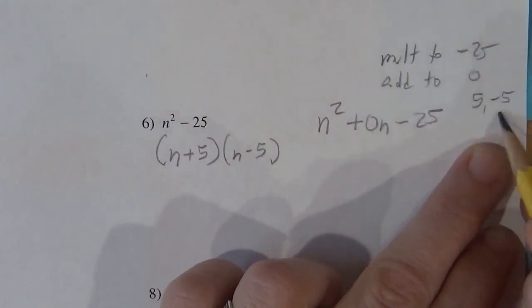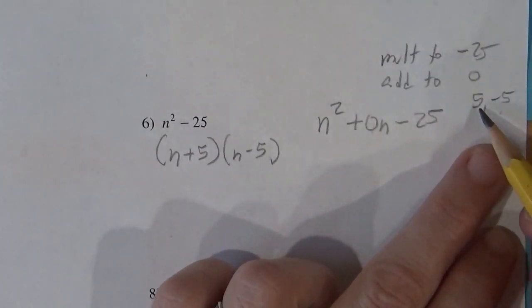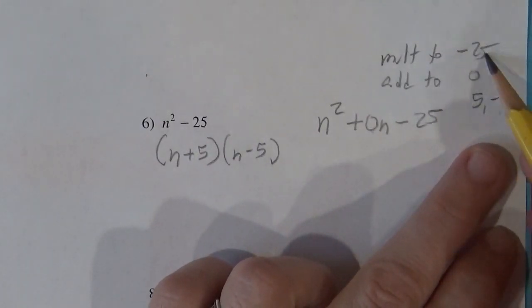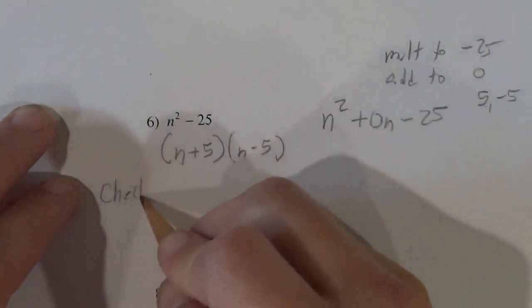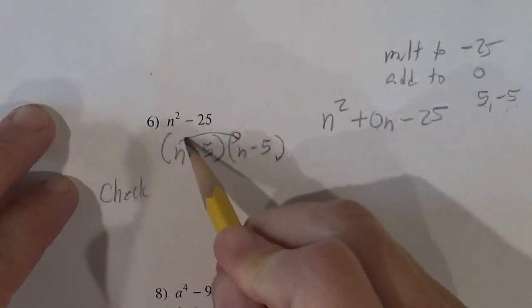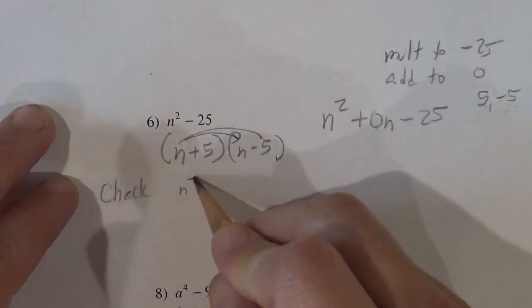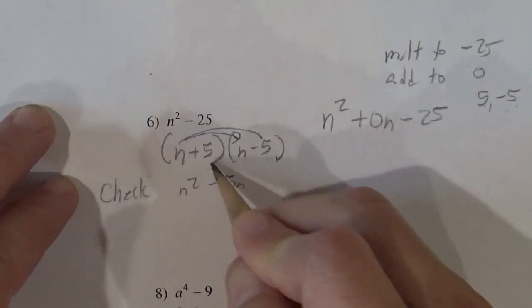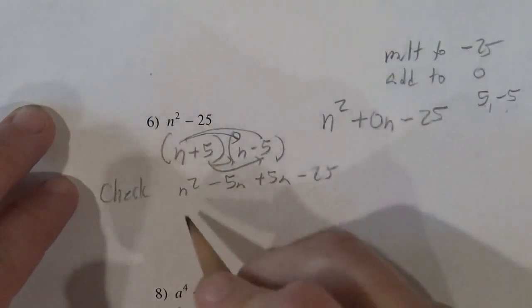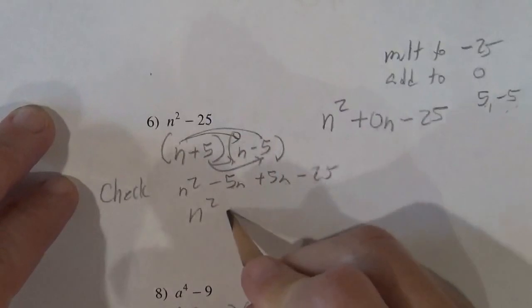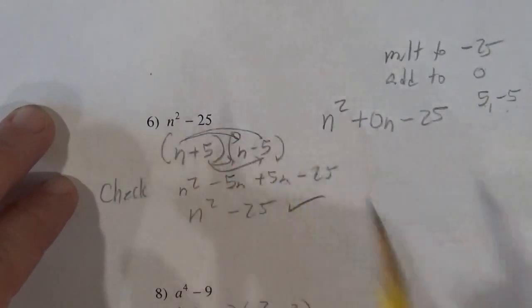How about a 5 and a negative 5? So 5 times negative 5 is negative 25. 5 plus negative 5 is 0. And that's why those have to match. If we checked this by foiling it, that'd be n squared minus 5n plus 5n minus 25. So that'd be n squared, those go away, minus 25. And that gives you the original.